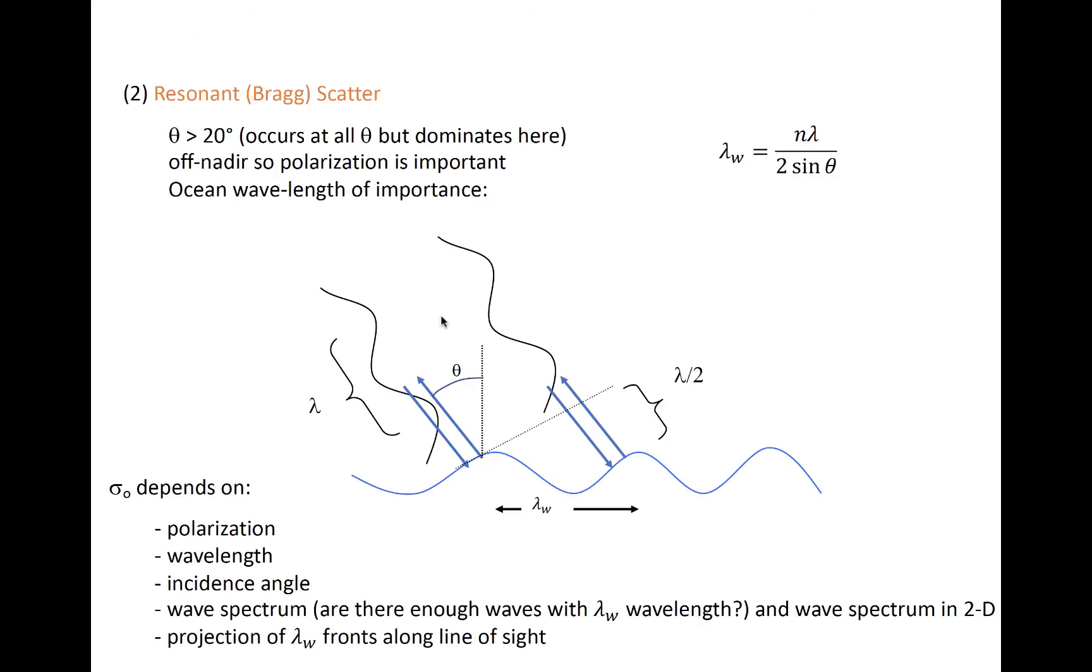The other type of scatter is resonance scatter, which is also called Bragg scatter. It occurs when some component of ocean waves has a wavelength that is equal to half of the scatterometer wavelength, divided by the sine of the incidence angle. The n in the numerator of this equation for the wavelength of the ocean waves that would cause resonance scatter is any positive integer that denotes that a family of Bragg scattering solutions exist.